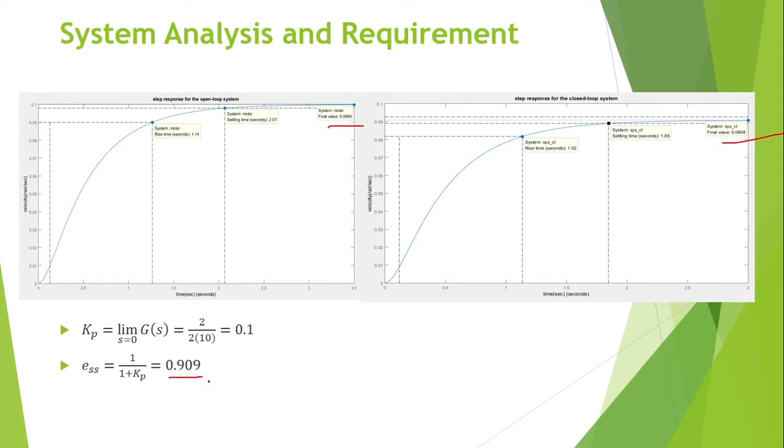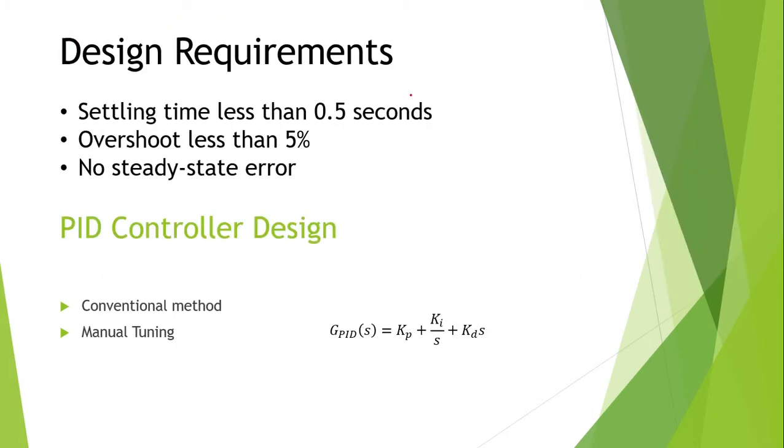The steady state error is about 0.909. So our design requirements are to improve the settling time to less than 0.5 seconds, overshoot less than 5%, and no steady state error. We will discuss two PID controller design methods.